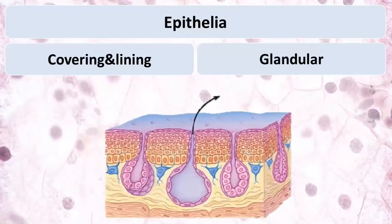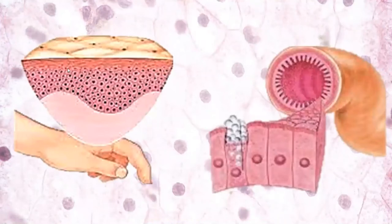Now we go to the classification of epithelia. We usually divide epithelia into two groups: covering and lining epithelia, and glandular type of epithelia. Covering and lining epithelia cover the surfaces of the body and line the cavities of the body, while glandular epithelium is present in the glands. In some textbooks, a third type — sensory epithelium — is also listed, which will be studied in the topic on sensory systems. Covering epithelium covers the surfaces of the body, for example the epidermis of the skin; lining epithelium lines the cavities, for example the epithelium of the gastrointestinal tract.